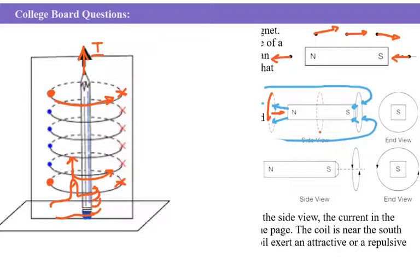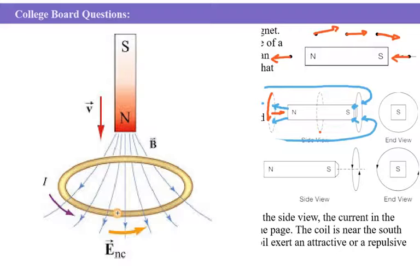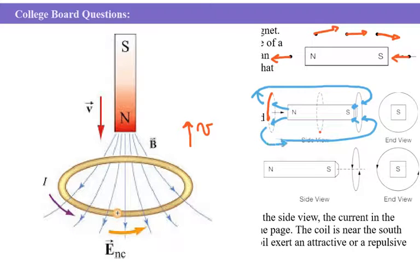That is the direction of the magnetic field around the current. Here's another example: if you have a coil or a loop moving in this direction, the velocity of the loop is shown moving to the right. The magnetic field lines come out and get back in that way. The velocity is to the right — same as our problem — and the magnetic field lines are getting into the loop.